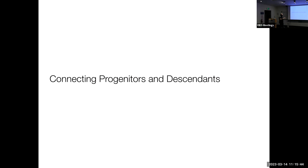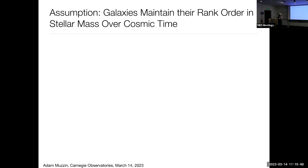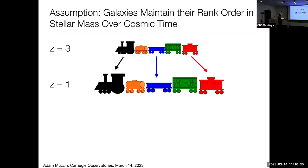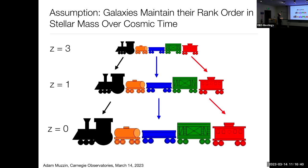We're going to use the mass function at different redshifts to connect progenitors and descendants. Ten years ago, the simplest approach was to assume that galaxies maintain their rank order in stellar mass over cosmic time. What you would do is take the galaxies, rank them by their mass at a given redshift — say redshift 3, putting the most massive at the front of the train — and assume that rank order doesn't change. Based on simulations, this is actually a remarkably good assumption, although not perfect. So you can go to redshift 1, rank order the galaxies again, and if they maintain that rank order, you can actually see what's growing into what.